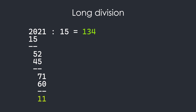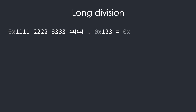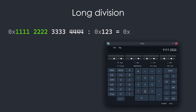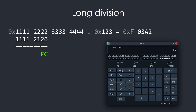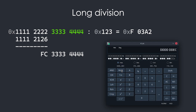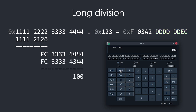We can use this same technique to perform our division by splitting the 64-bit dividend in two. For example, to divide 0x11112222 33334444 by 0x123: first we divide the upper 32 bits 0x11112222 by 0x123, which gives us quotient 0xF03A2 and remainder 0xFC. Next we append the lower 32 bits to the remainder, giving us 0xFC33334444, and divide that again by 0x123. Putting the two parts together, our final result is 0xF03A2DDDDDDDEC with remainder 0x100.